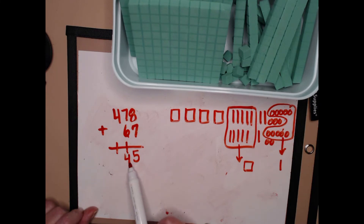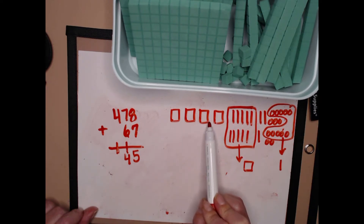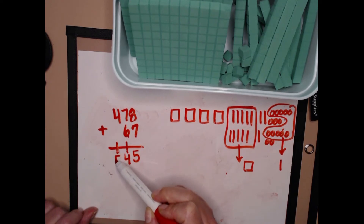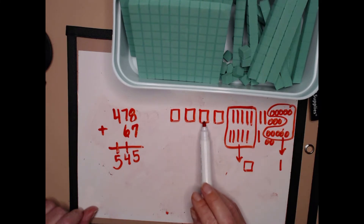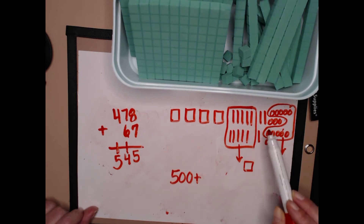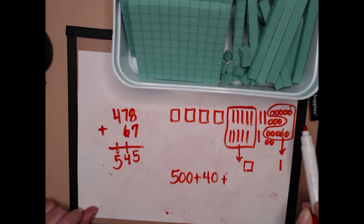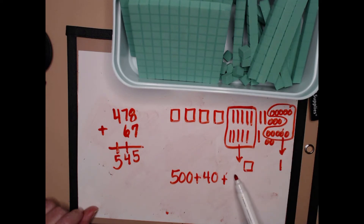Fourteen tens is one hundred forty. I would have kept my four tens and put my one hundred in the hundreds place. Now let's count my hundreds: one hundred, two hundred, three hundred, four hundred, five hundred — four hundreds plus one hundred equals five hundred. Let's make sure it matches my proof picture: five hundred, forty, and five ones. Equals five hundred forty-five.